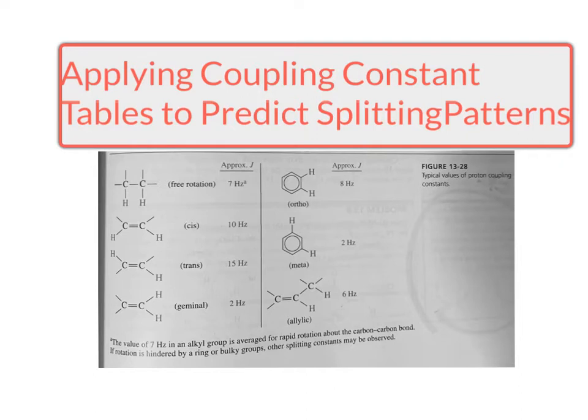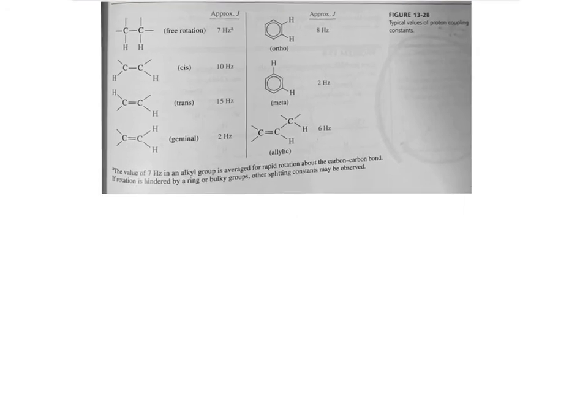Another thing we should be able to do is take a structure and use this information to make a reasonable splitting pattern tree for that particular structure. We went over a discussion in a previous video about general aspects of creating a splitting pattern tree, and in those examples you were given specific J values — that is, specific Hertz values — to represent how widely the sub-peaks were spread.